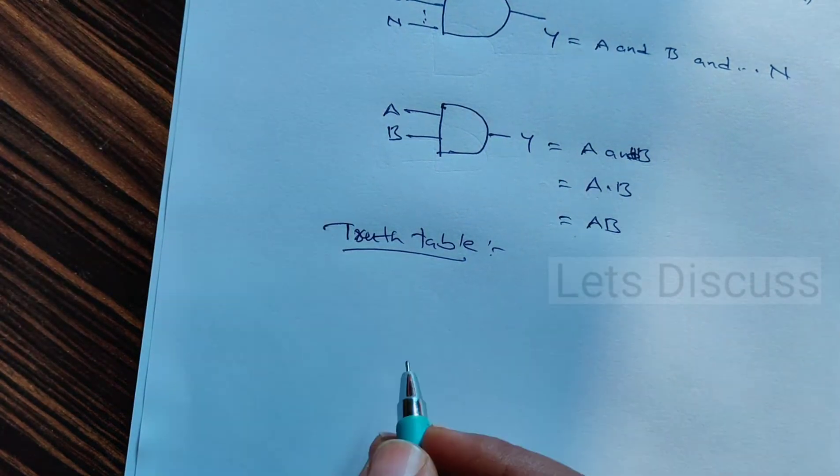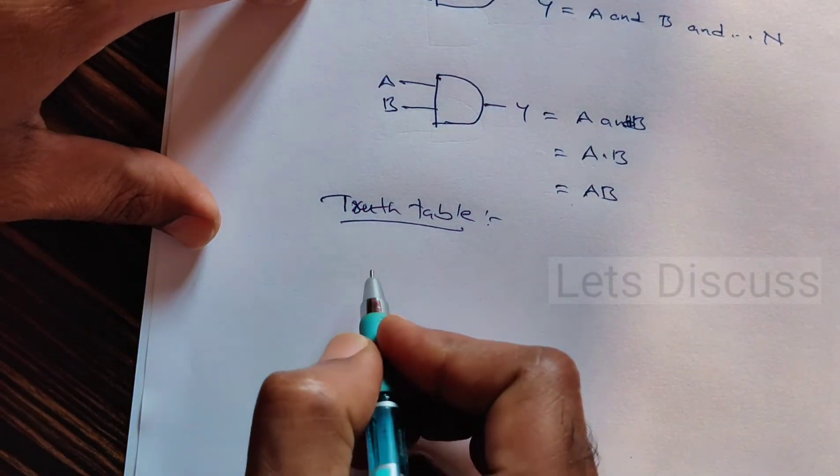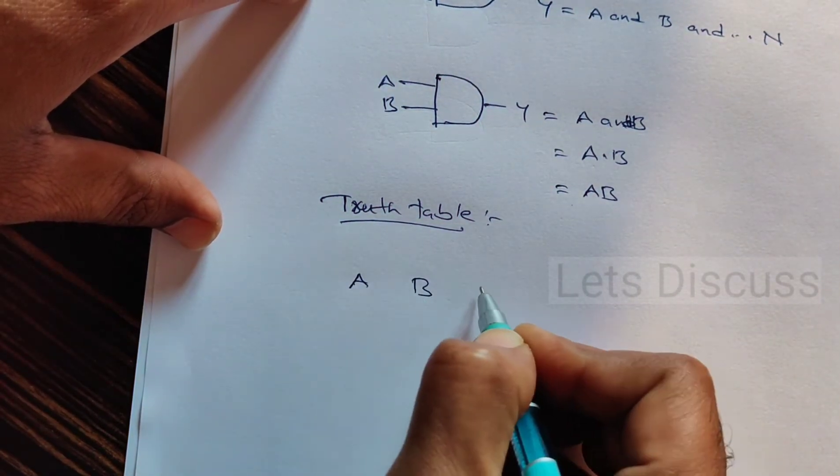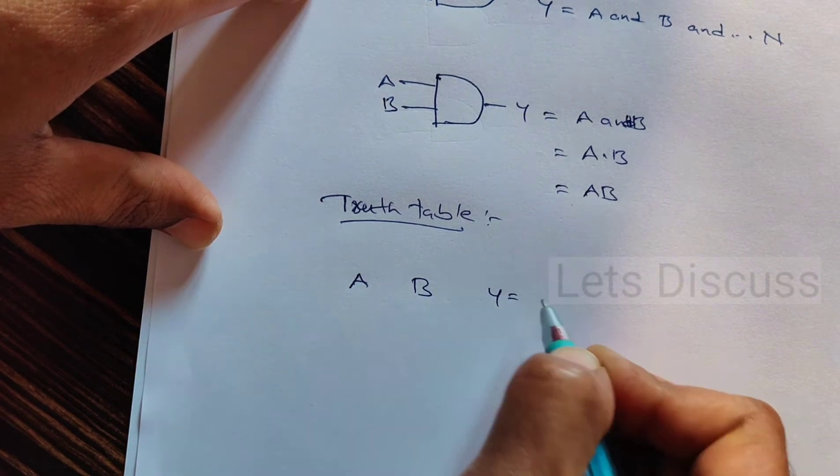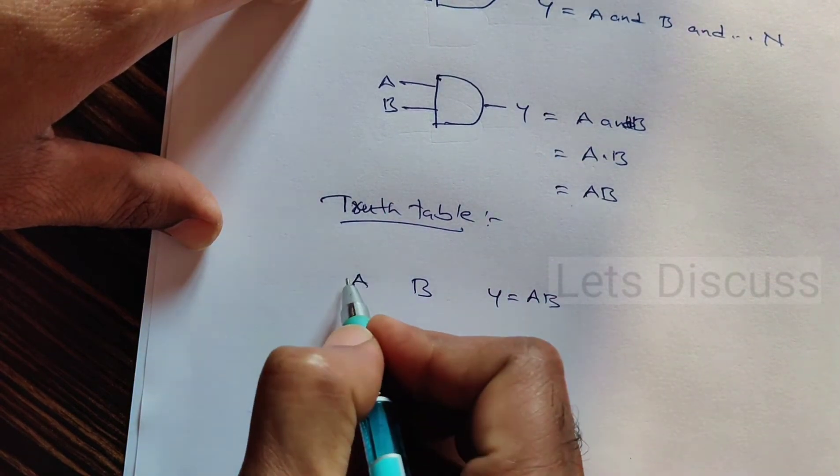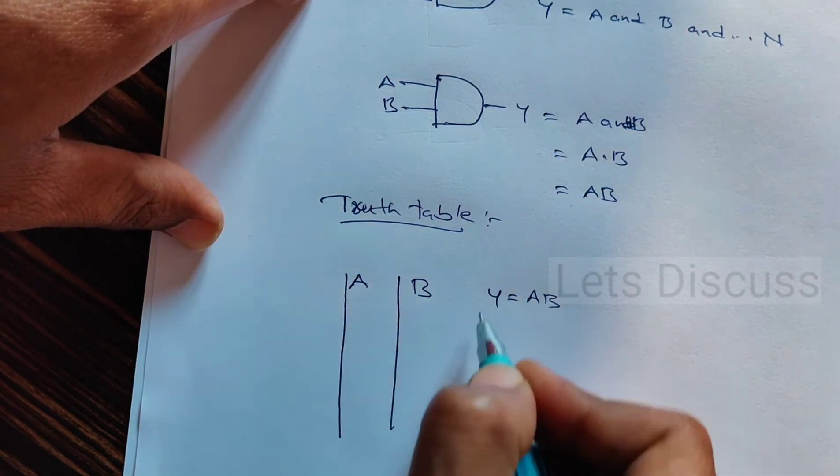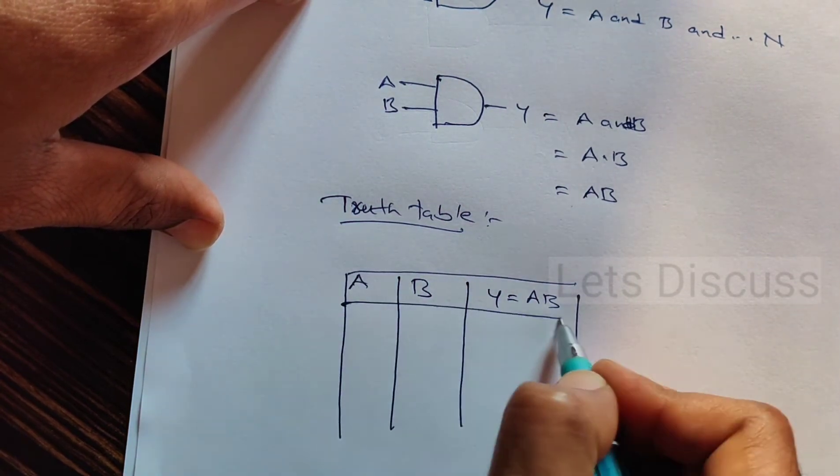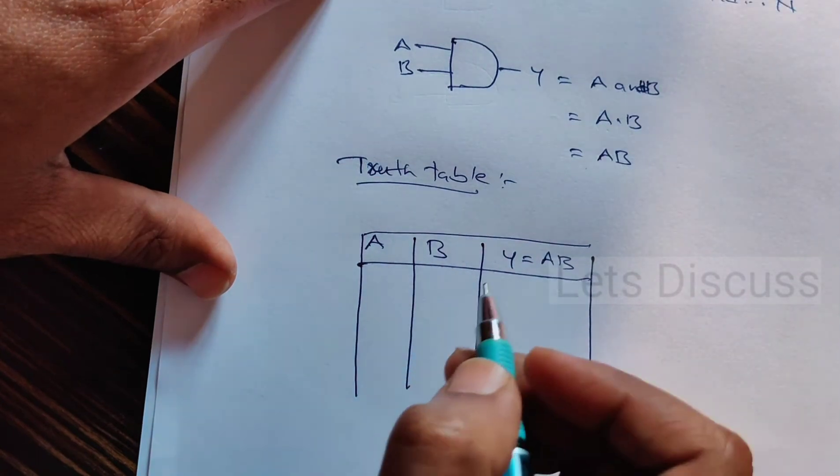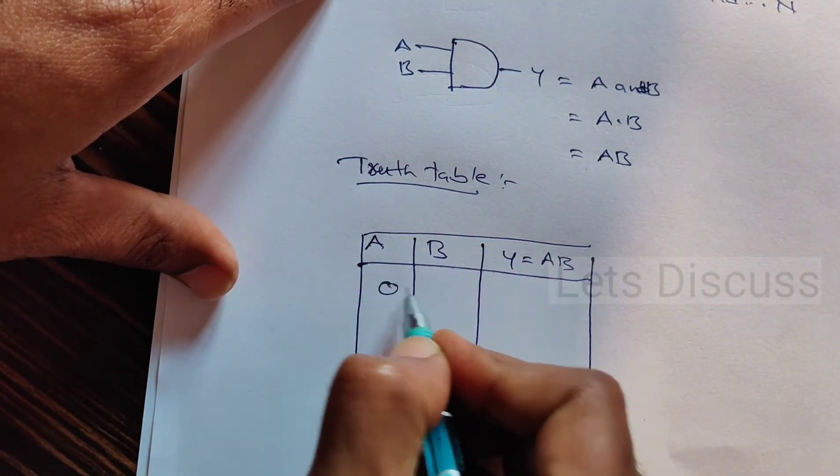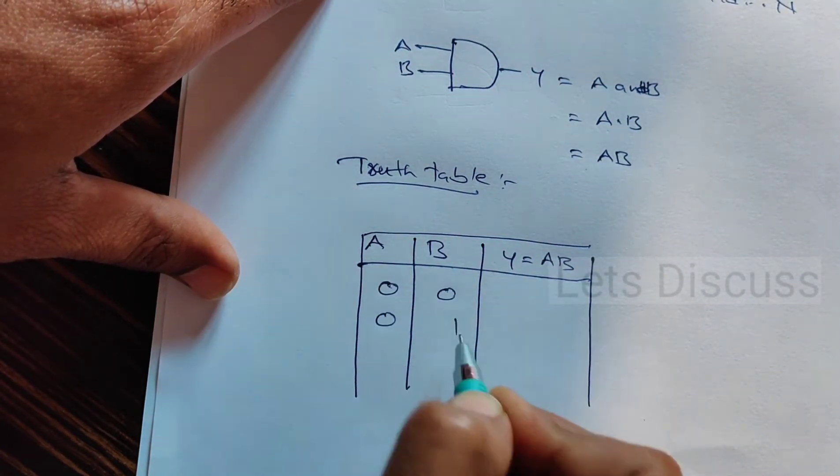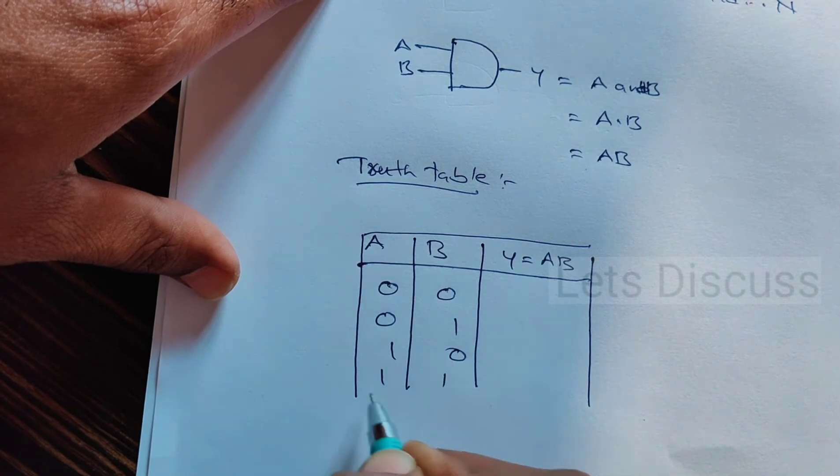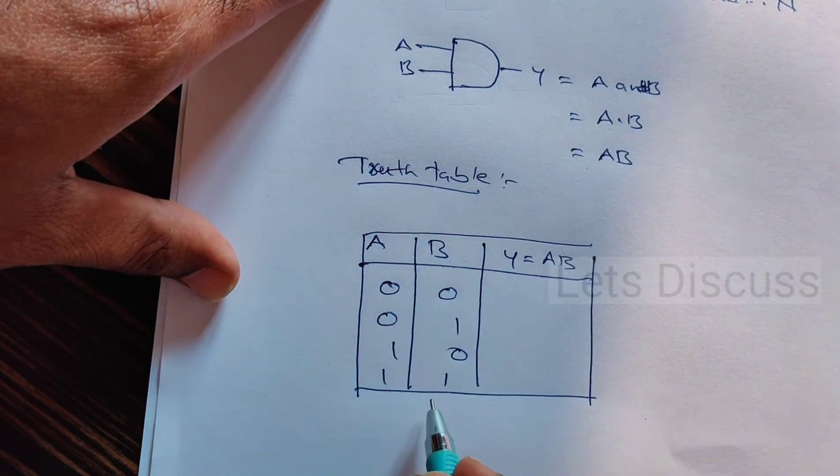Let us write the truth table for this. What are the inputs? A, B, and output is Y, which is equal to AB. What are the different possibilities of input? Initially 0 0, 0 1, 1 0, 1 1. These are the only four possibilities we get.